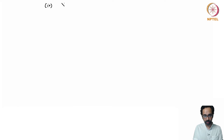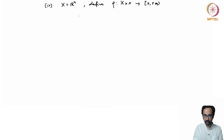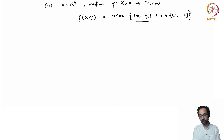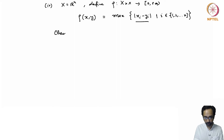We give another example of a metric on ℝⁿ. Let X = ℝⁿ and define a function ρ from X × X to the positive real line as follows: ρ(x, y) is the maximum of all the numbers |xᵢ − yᵢ| for i in {1, 2, ..., n}. So you take the maximum of all the distances within each coordinate. I leave it to you to check that ρ is a metric function on ℝⁿ — this is not so difficult.